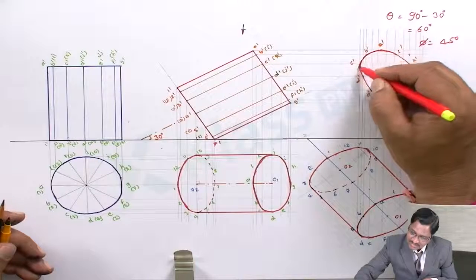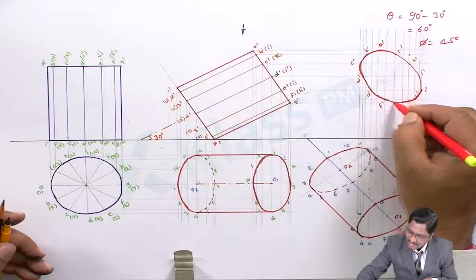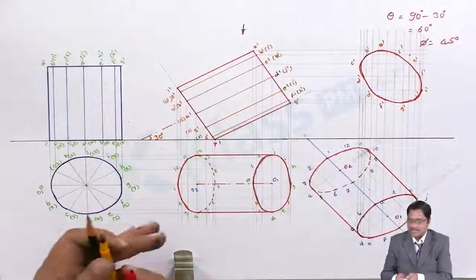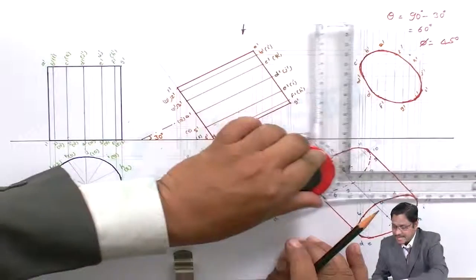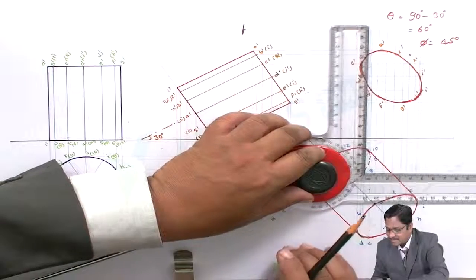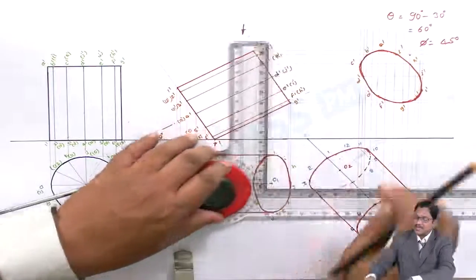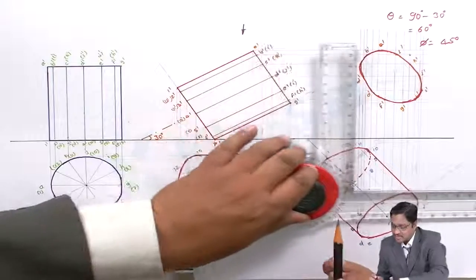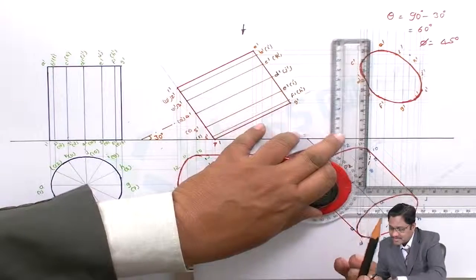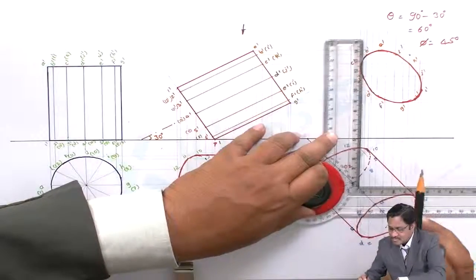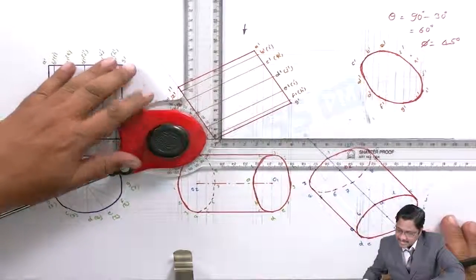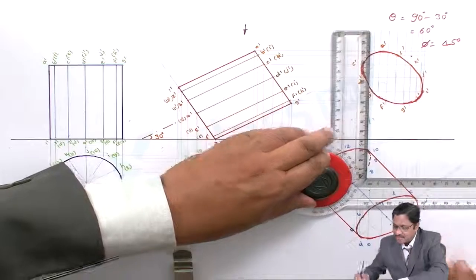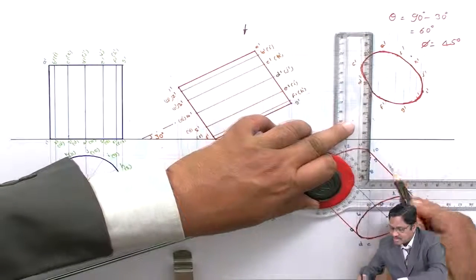Mark with HB pencil so that all the lines are connected. Similarly complete the bottom side — track every line of reference for the bottom. If there is any confusion, erase those things and freshly draw from the other layer. Once you confirm the shape, erase the construction lines and mark the projectors clearly.